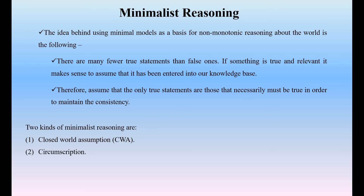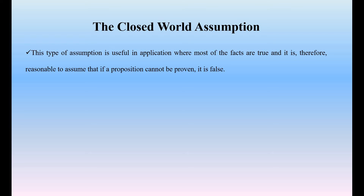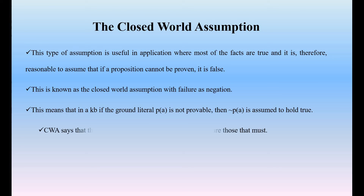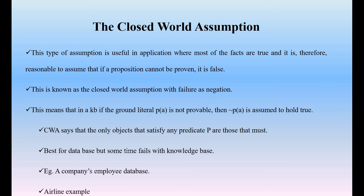There are two kinds of minimalist reasoning: number one is closed world assumption, and number two is circumscription. Now we are going to see each of these.